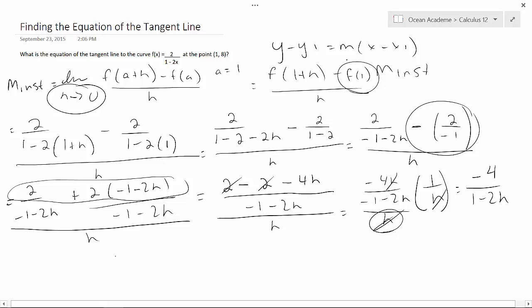So this becomes -4/(1 - 2(0)). So simplify again. -4 over, now this was minus, minus 1. So our slope ends up being 4.